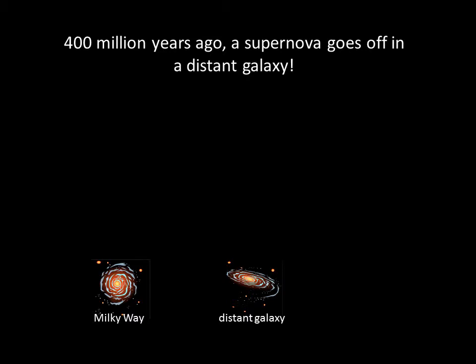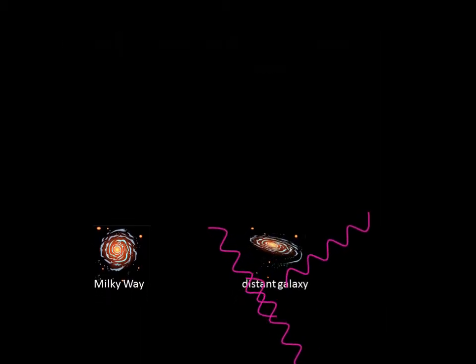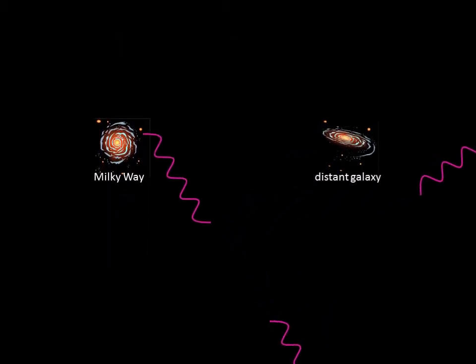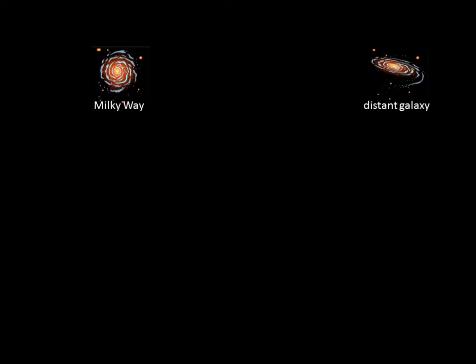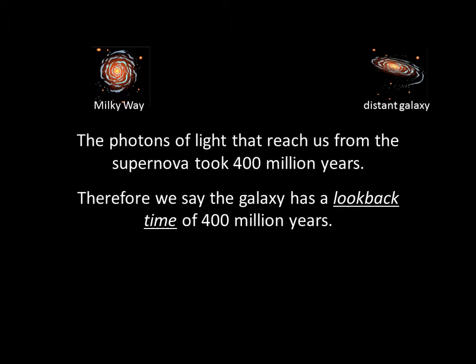To get an idea of how this works, imagine our Milky Way and a distant galaxy 400 million years ago. A supernova explosion occurs in the distant galaxy. Photons of light travel in all directions away from the supernova. Because space is expanding, the distance between the Milky Way and the galaxy gets larger. The photons of light that reach us from the supernova took 400 million years. Therefore, we say the galaxy has a look-back time of 400 million years.